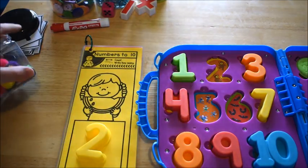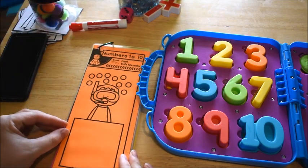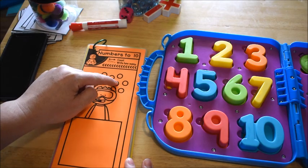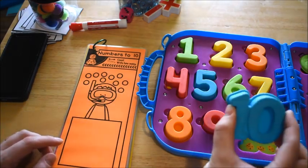This one's cute. It's a little scuba diver and he's got his bubbles—one, two, three, four, five, six, seven, eight, nine, ten. Then you would have to find the number ten and place it in the square.